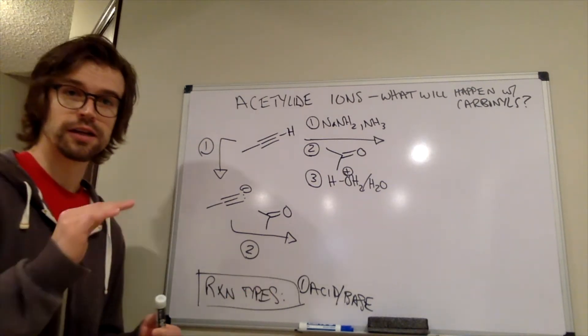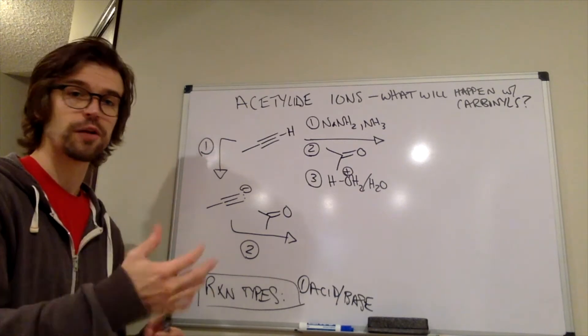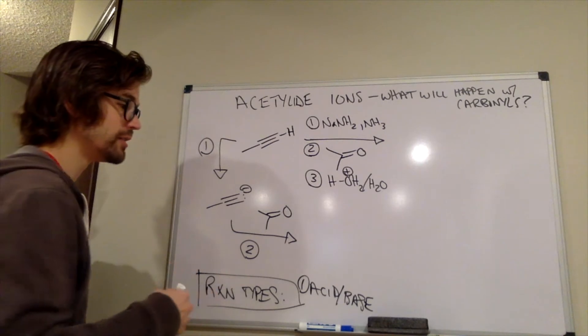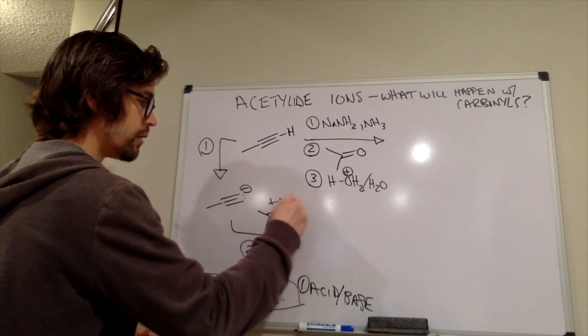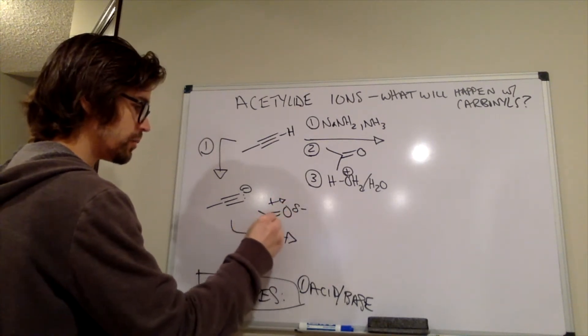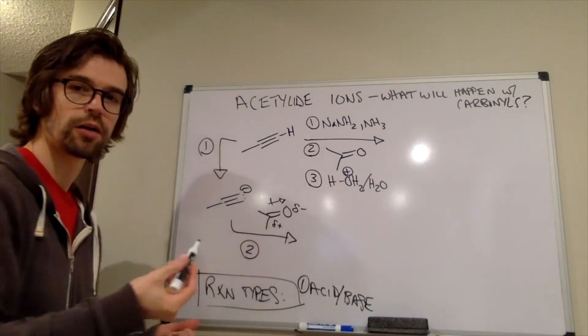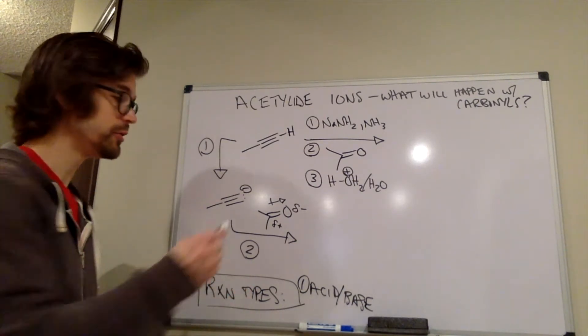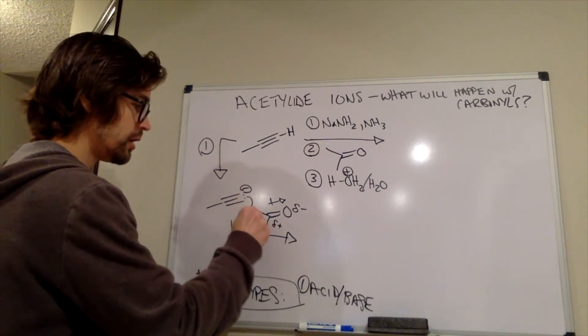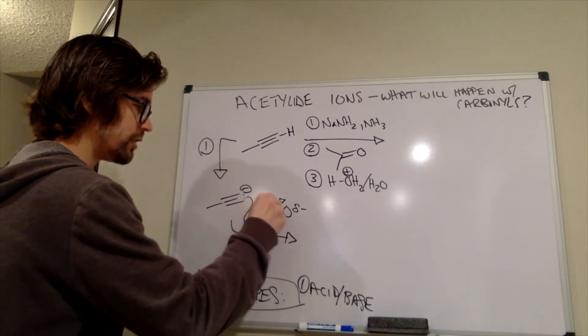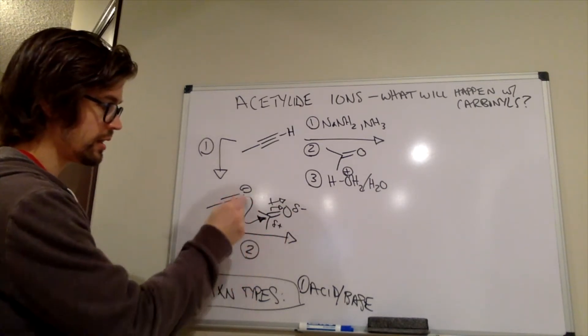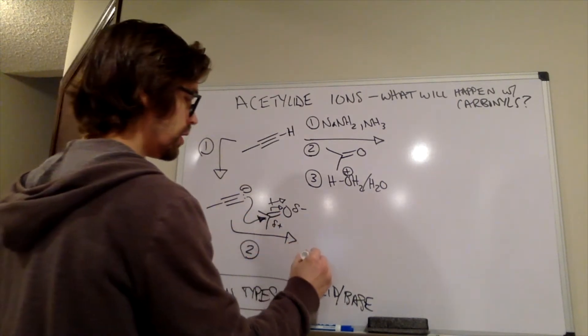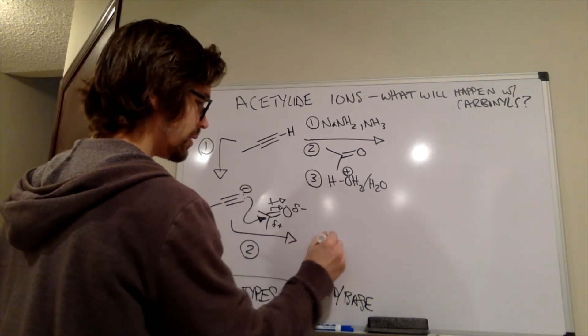So where is the negative? The negative is still on that acetylide ion. And where's the positive? The positive is now, again, we have a partial negative on that oxygen, a partial positive on that carbon of the carbonyl. So instead of an SN2 reaction, instead of a substitution reaction, we're getting a nucleophilic addition reaction where the electrons are added to the carbonyl carbon and the electrons are moving up to that oxygen. So that provides this intermediate here.